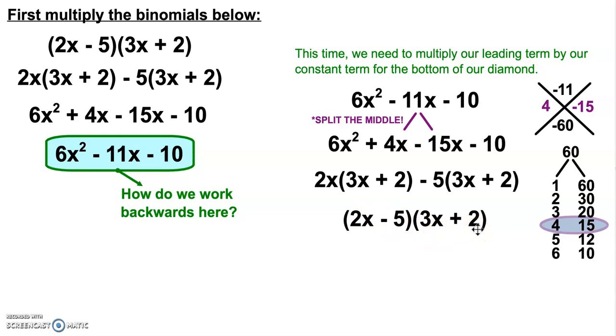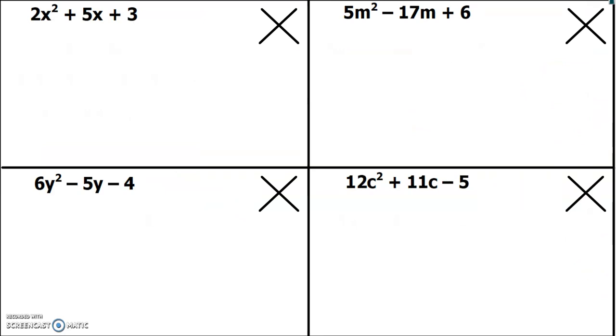So here, when our leading coefficient is anything other than 1, we have to multiply this leading coefficient by our constant to be able to get the bottom part of our diamond. So let's take a look at some examples. 2x squared plus 5x plus 3. I need to multiply this 2 times the 3 to get the 6 in my diamond. The 5, that middle term, still goes on top. So I need factors of 6 that add to 5. So 2 and 3.